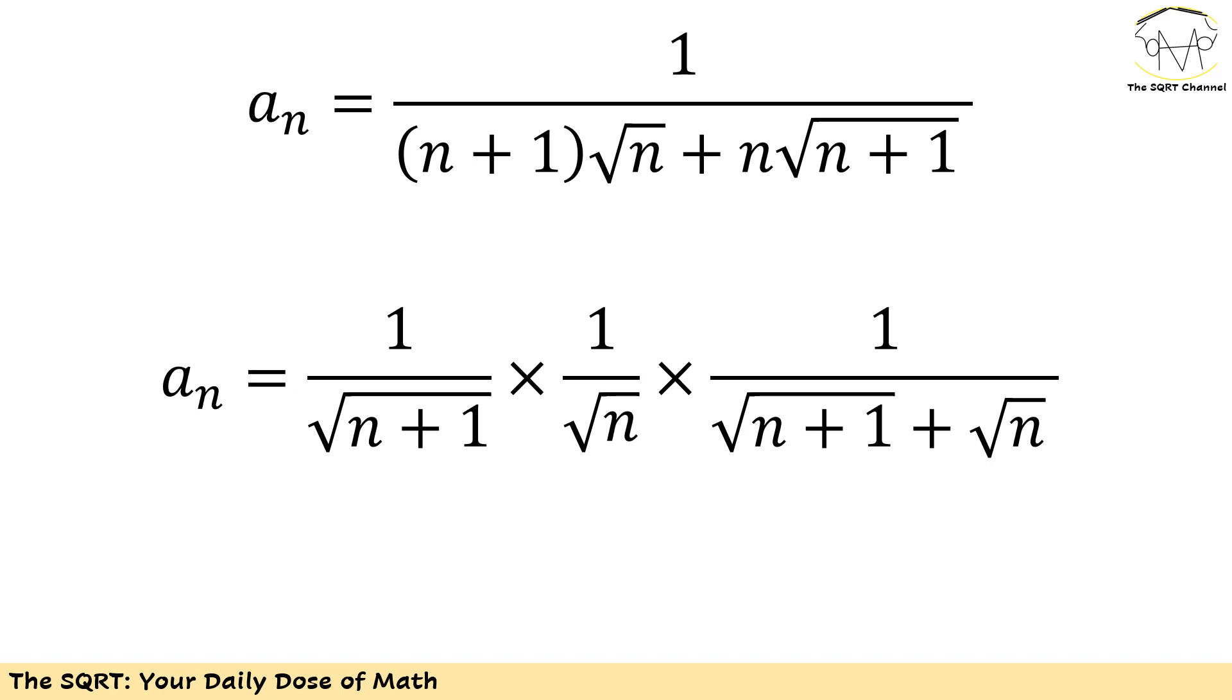In the first term I have (n+1) and √n. On the other hand for the second term I have n and √(n+1). As you can see n and (n+1) are going to be common between the two terms that I have for the denominator.